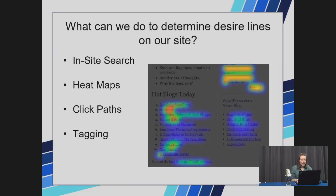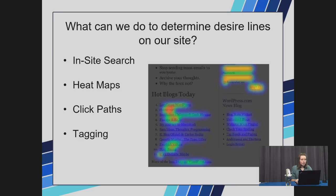Then there is tagging. If you let users tag content on your site, you allow them to tell you how they classify your information, speak in their own words, and teach you their vocabulary. Then there are ratings, which are star ratings or comments on your content, or the measuring of how well your content fares on social sites. These allow you to know what your audience does prefer.